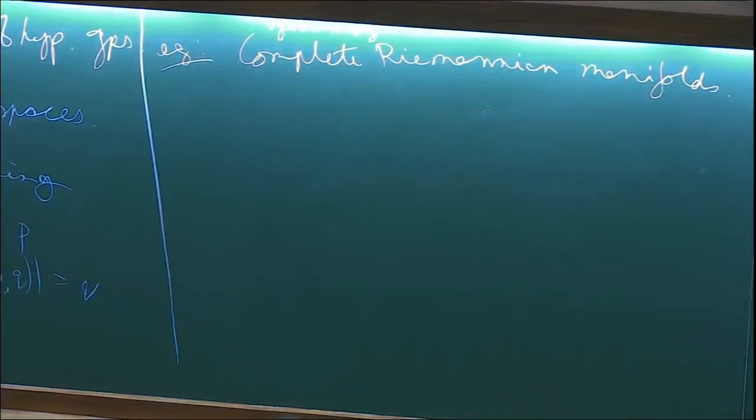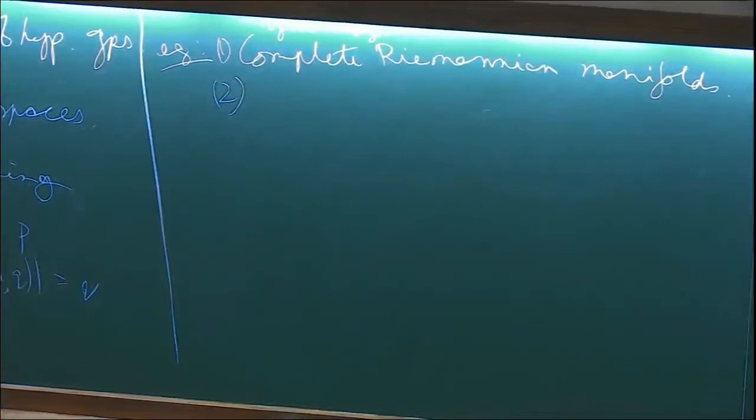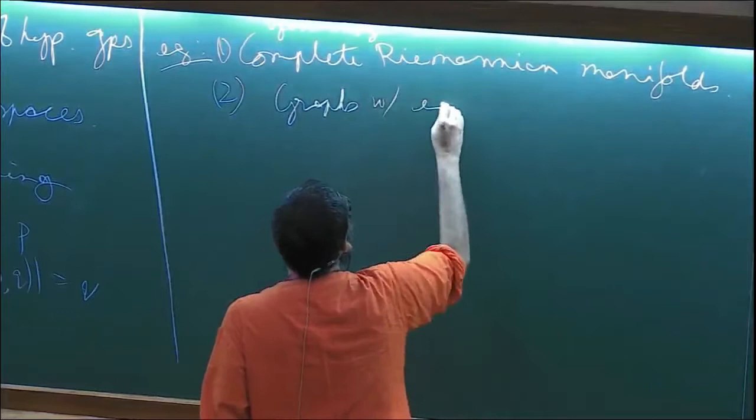For proper metric spaces, geodesic completeness and metric completeness are equivalent. So geodesically complete Riemannian manifolds are one set of examples. The second set of examples — and this is really what's going to motivate the approach — are graphs with edge length one: connected graphs where you declare all edges have length one.